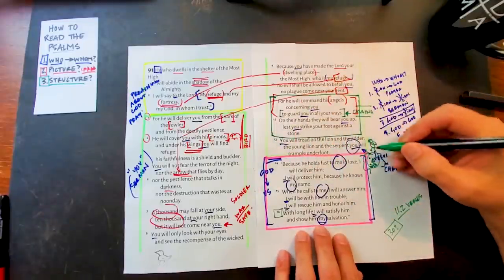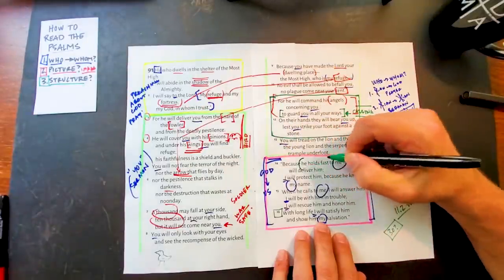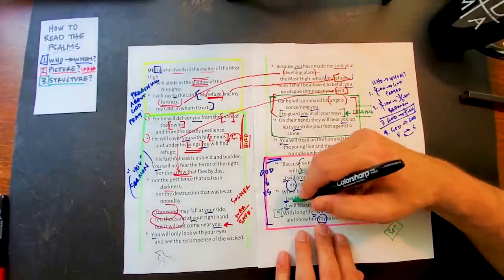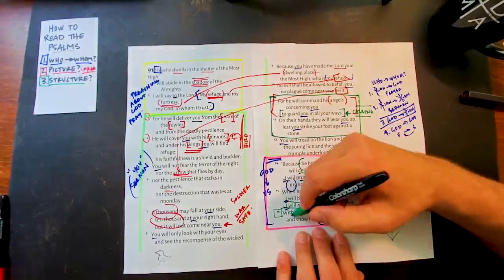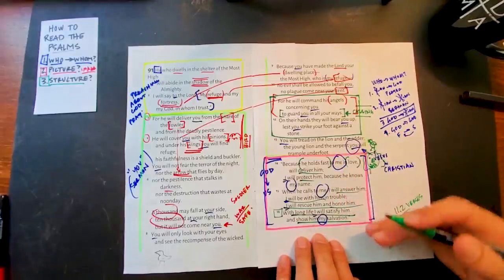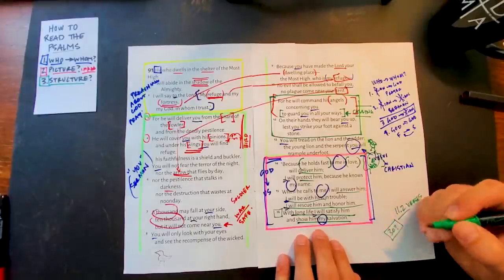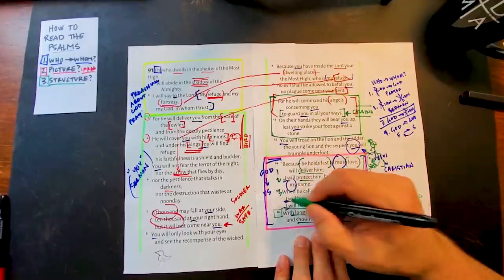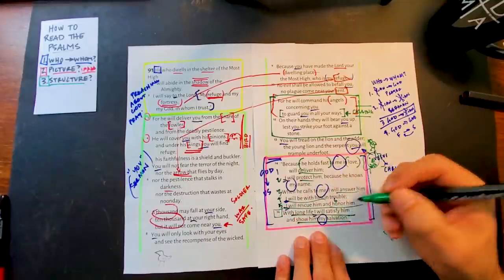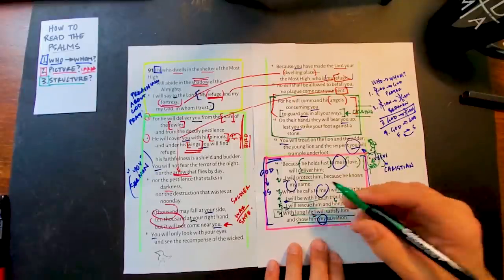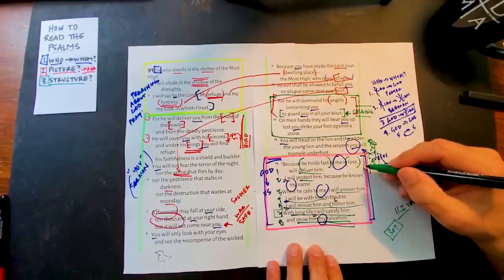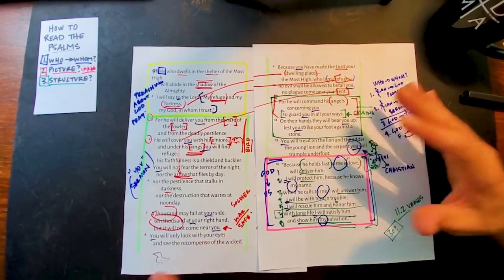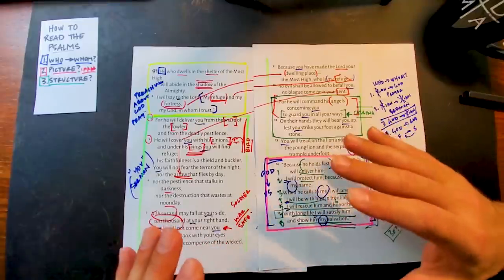Because he holds fast to me in love, and then it switches. It says hiding and all this, and now it's holding fast to me in love. I will deliver him. I will protect him because he knows my name. When he calls to me, I will answer him. I will be with him in trouble. I will rescue him and I will honor him with long life. I will satisfy him. I will show him my salvation. So it ends with finally the little bird that's being protected. The Lord just lavishing us with promises. One, that he'll deliver. Two, that he'll protect. Three, that he will answer. Four, that he will be with us in trouble. Five, that he will rescue. Six, that he will honor. Seven, that he will satisfy us with long life. And eight, that he will show us his salvation. These are the promises then that the psalm culminates with that we can take to the bank. That's the picture of the psalm: a bird being hunted but finding safety under the wings of the mama bird.